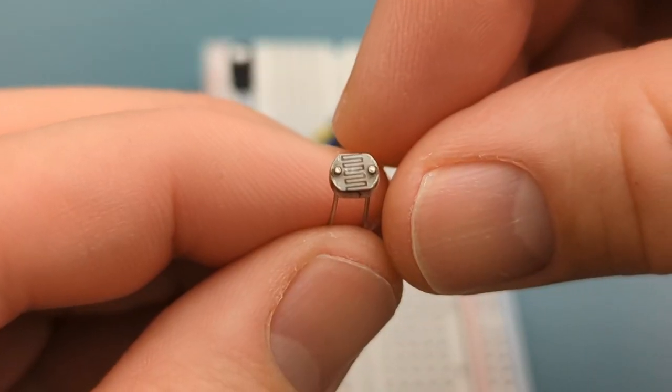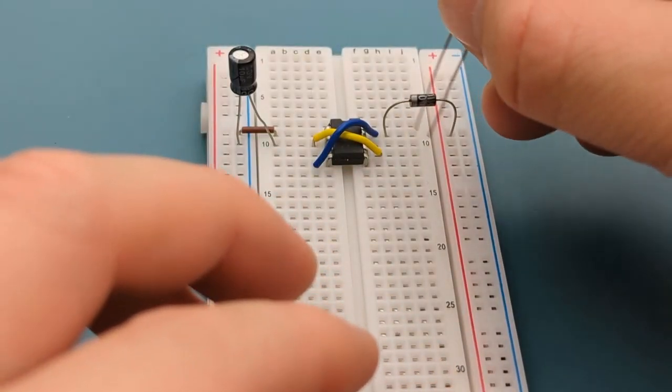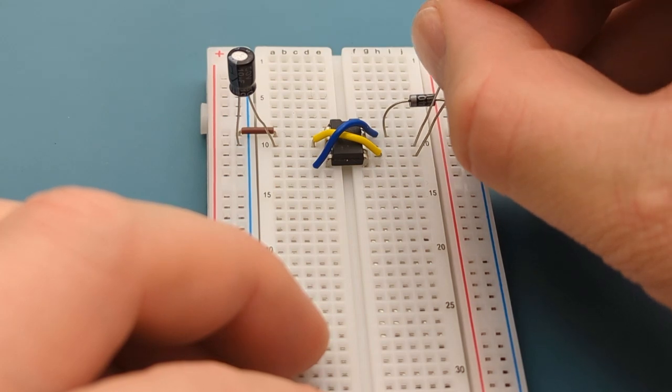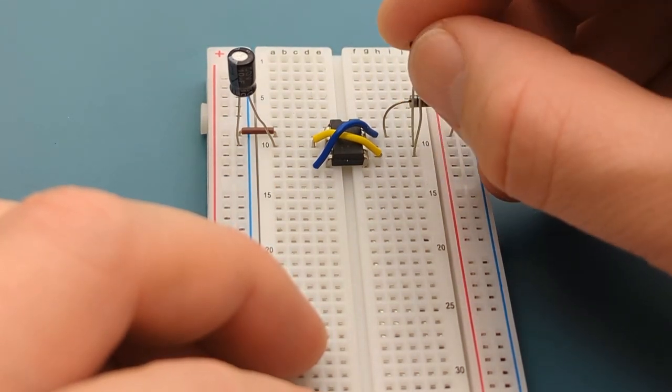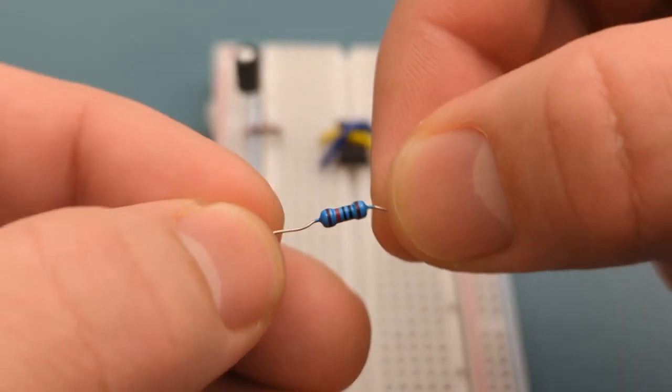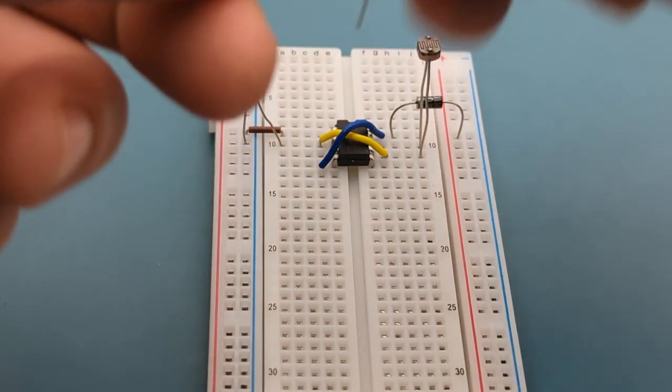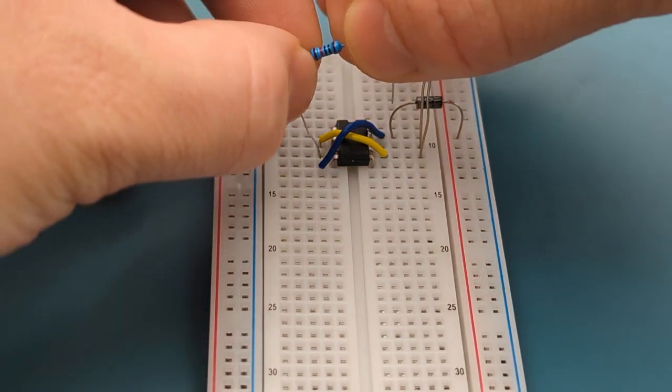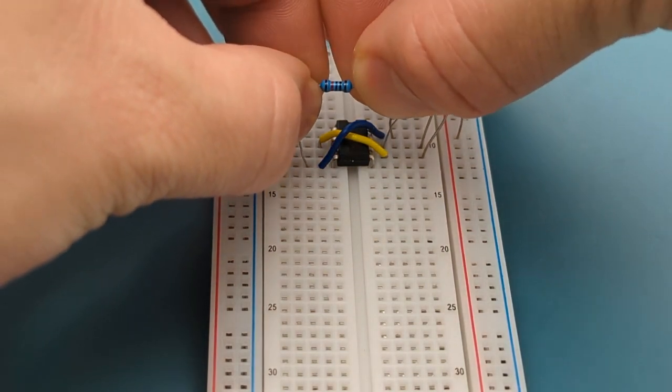Insert an LDR into pin 6 or threshold and pin 7 or discharge. Bend the ends of a 10,000 ohms resistor. Insert the 10,000 ohms resistor to pin 4 or reset and pin 7 or discharge.